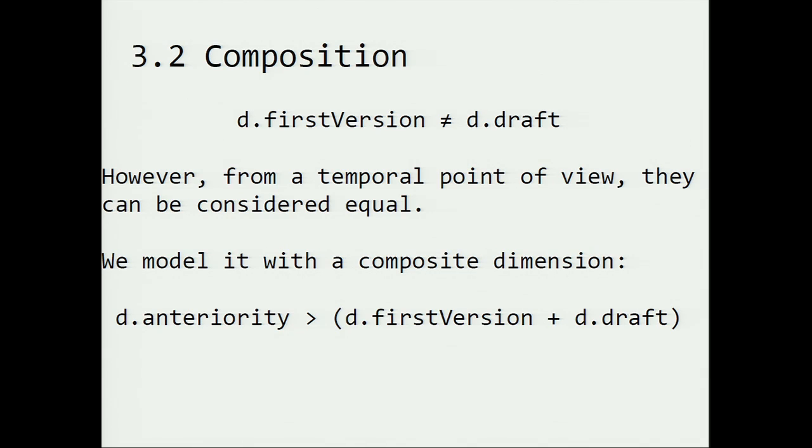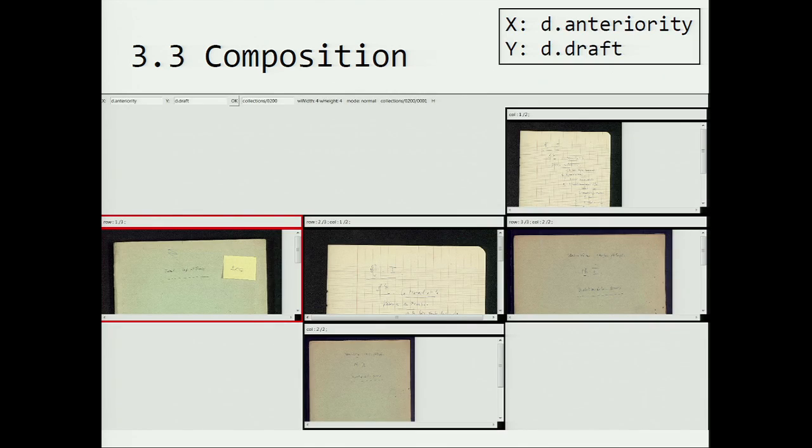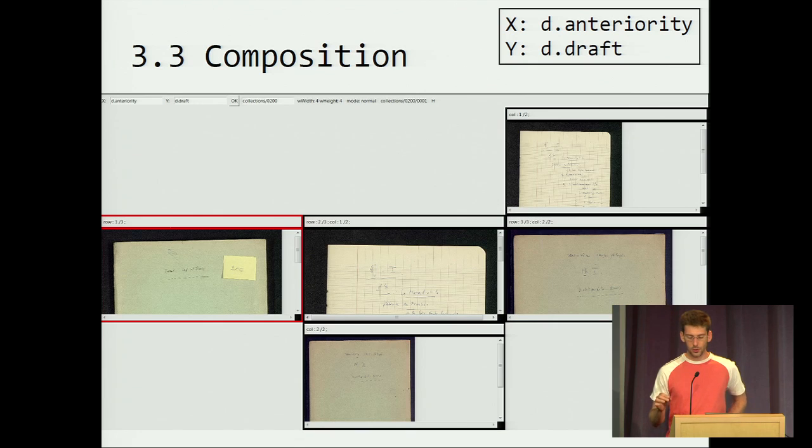Therefore, we model this situation with a composite dimension. And we say, okay, for example, d.anteriority is a composition of first version and draft. And once the user has expressed this fact, the anteriority dimension will be automatically populated with fragments. And here, we see that this comes before that, which comes before that, and this fragment at the center comes before this fragment because it is a draft of this fragment.